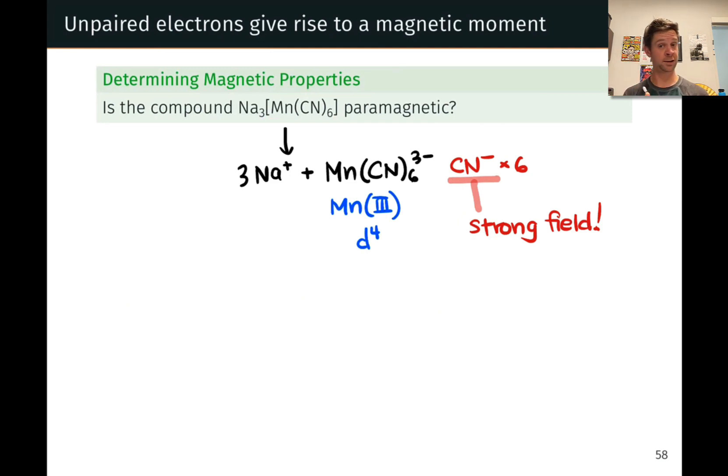We know the splitting is octahedral here, we know we're dealing with Δoct, because we have a 6-coordinate complex here with the 6 cyano ligands around the manganese center.